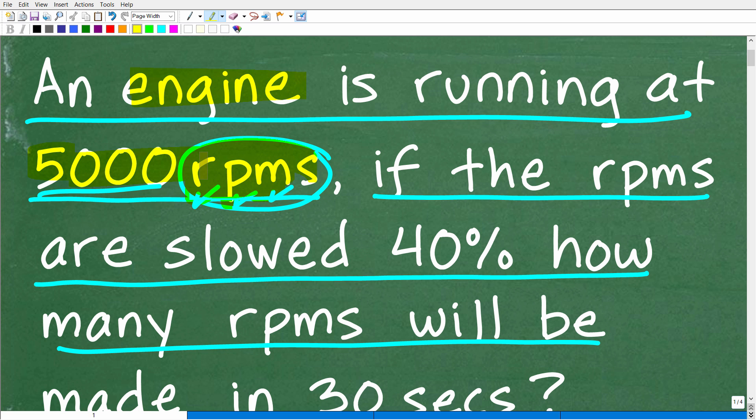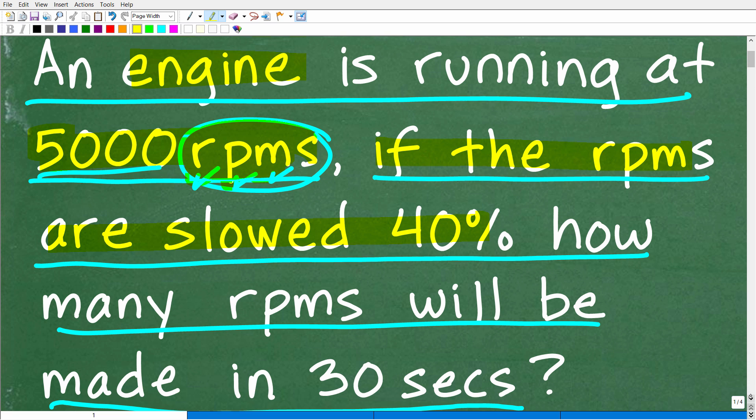Now, let's suppose your foot is on the accelerator. Then you're going to kind of back off. Maybe it's going a little bit too fast. And now you're going to slow that engine down 40%. So if the RPMs are slowed 40% from the 5,000 RPMs, how many RPMs, or revolutions rather, okay, so we want to kind of understand this, is how many revolutions will be made in 30 seconds after we slow the engine down 40%.